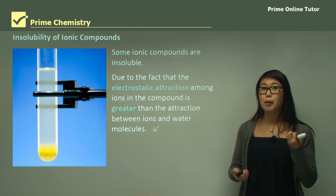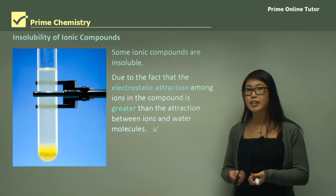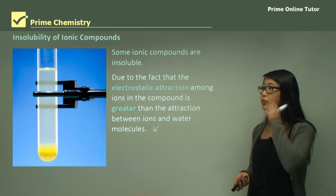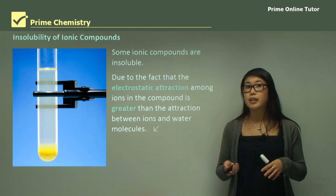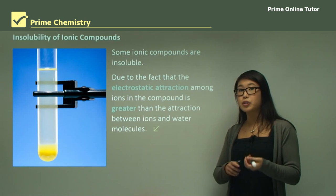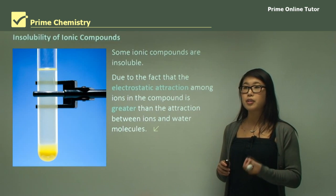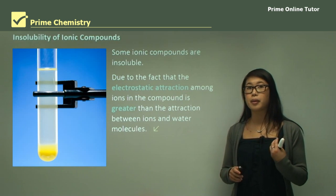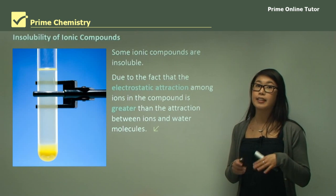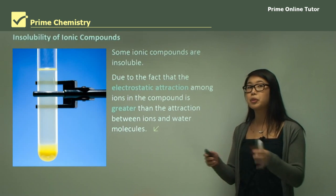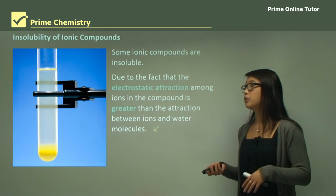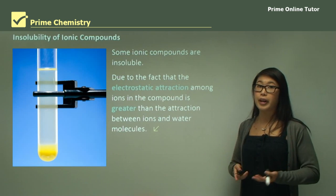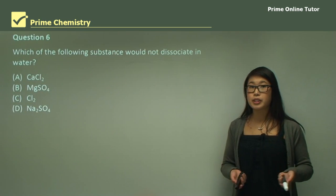Ionic compounds consist of a positively charged cation and a negatively charged anion. When placed in water, they may dissociate and undergo solvation — or hydration if water is the solvent. This happens because the negatively charged ions are attracted to the positively charged hydrogen sides of the water molecule, and the positively charged ions are attracted to the negatively charged oxygen side. In some cases this does not occur because the electrostatic attraction within the compound is too great.